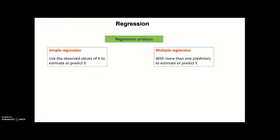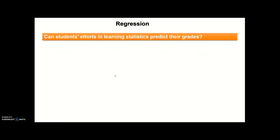We have basically two types of regression: simple regression analysis and multiple regression analysis. If we have only one predictor in the analysis, we call it simple regression. If we have more than one predictor to estimate or predict our outcome variable (y), then we call it multiple regression. In this video, I'm going to mainly concentrate on simple linear regression analysis.